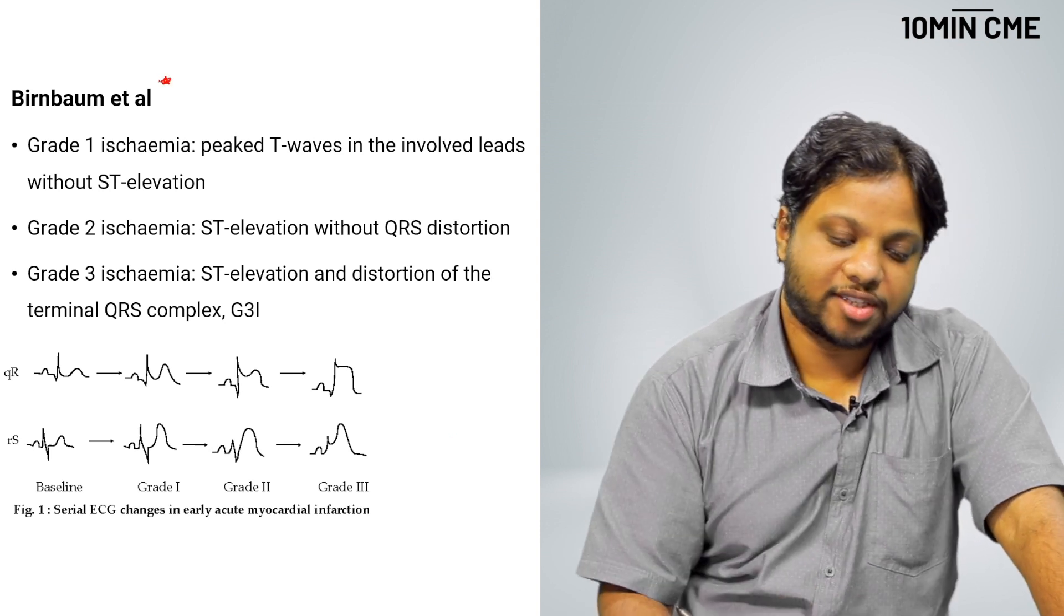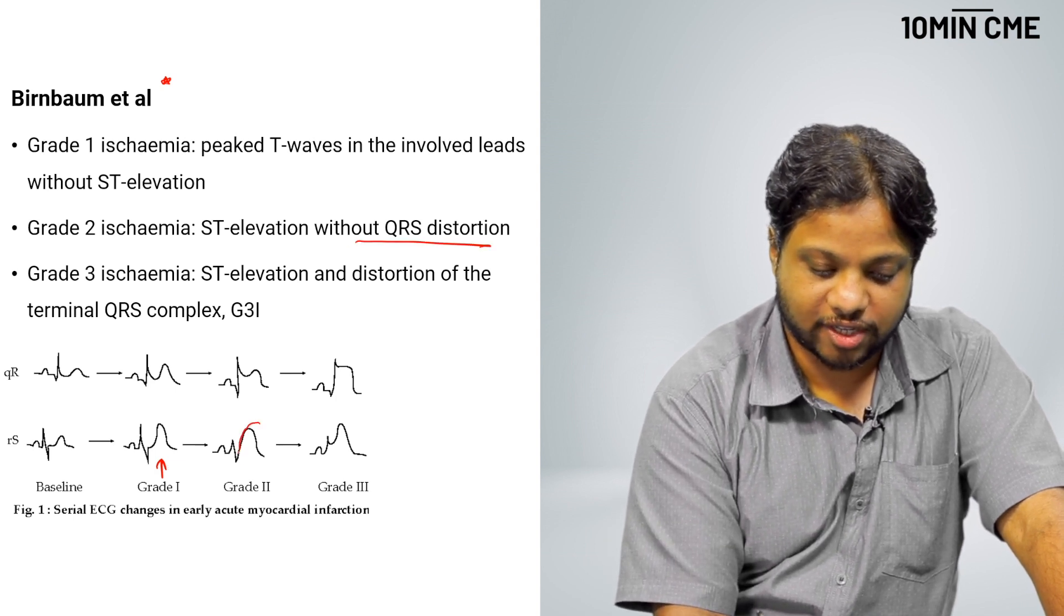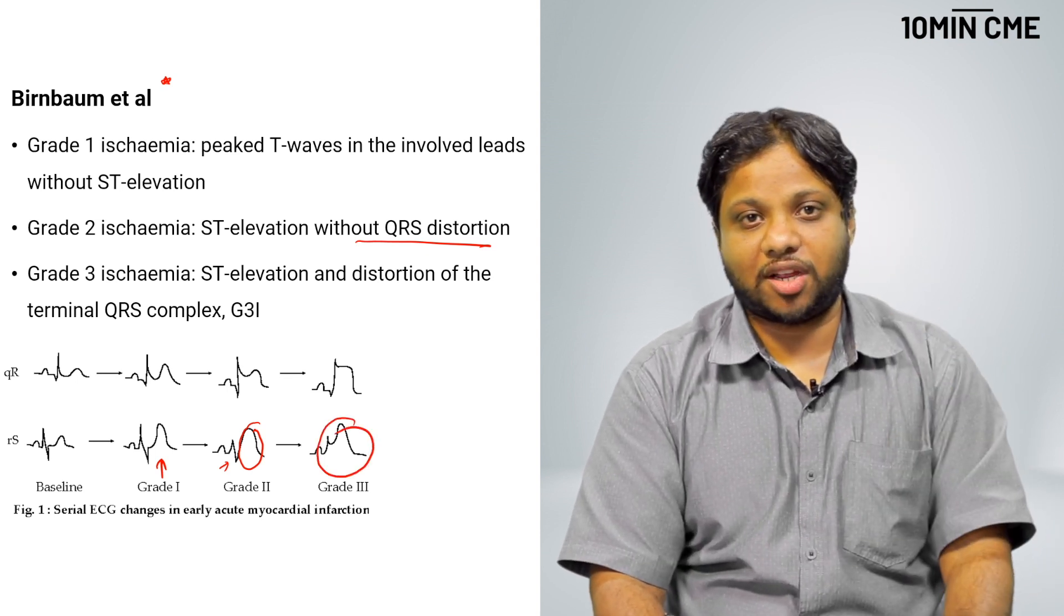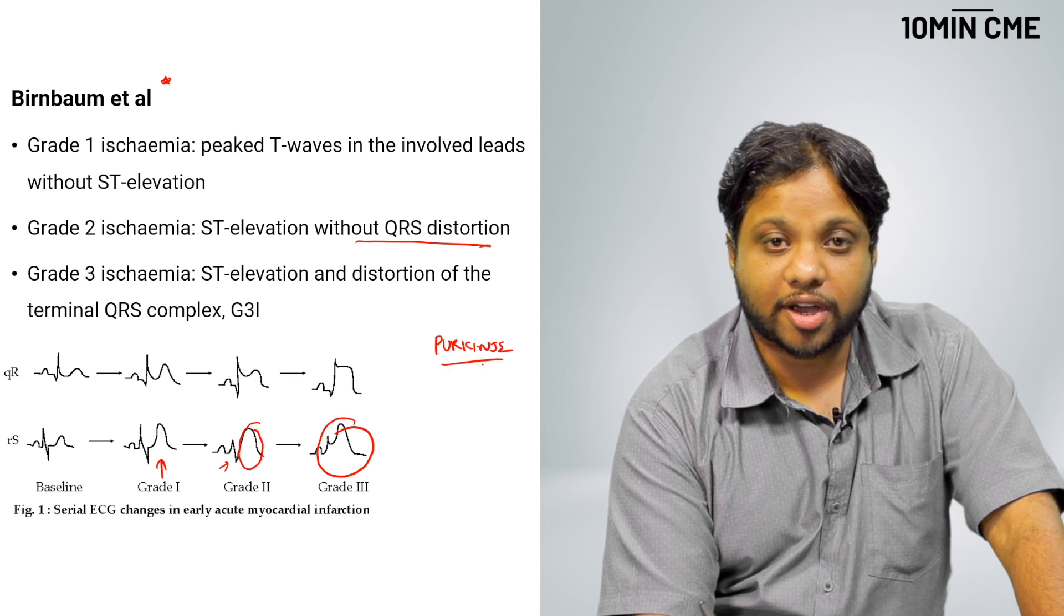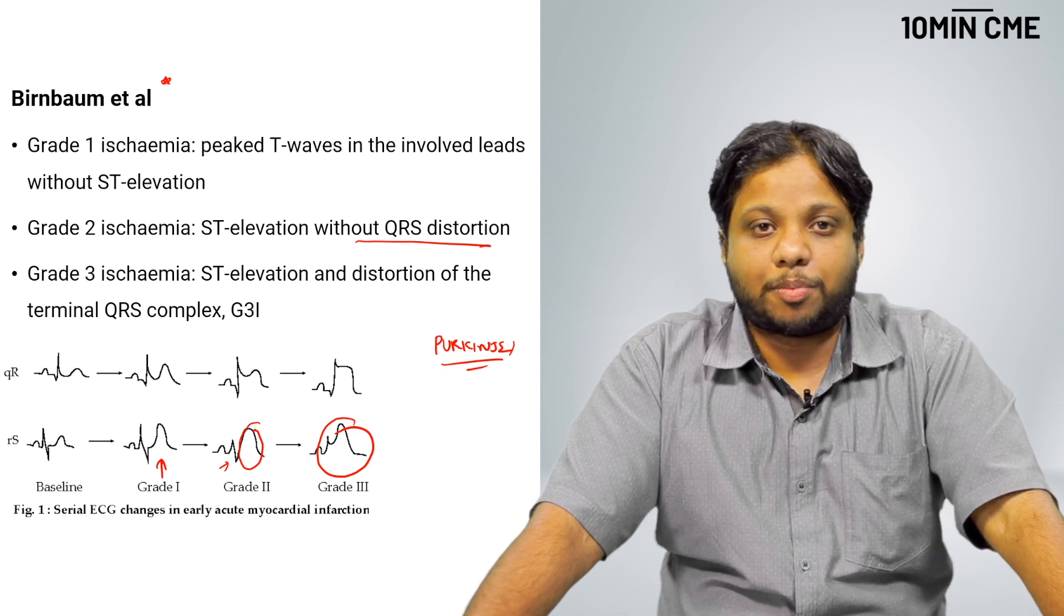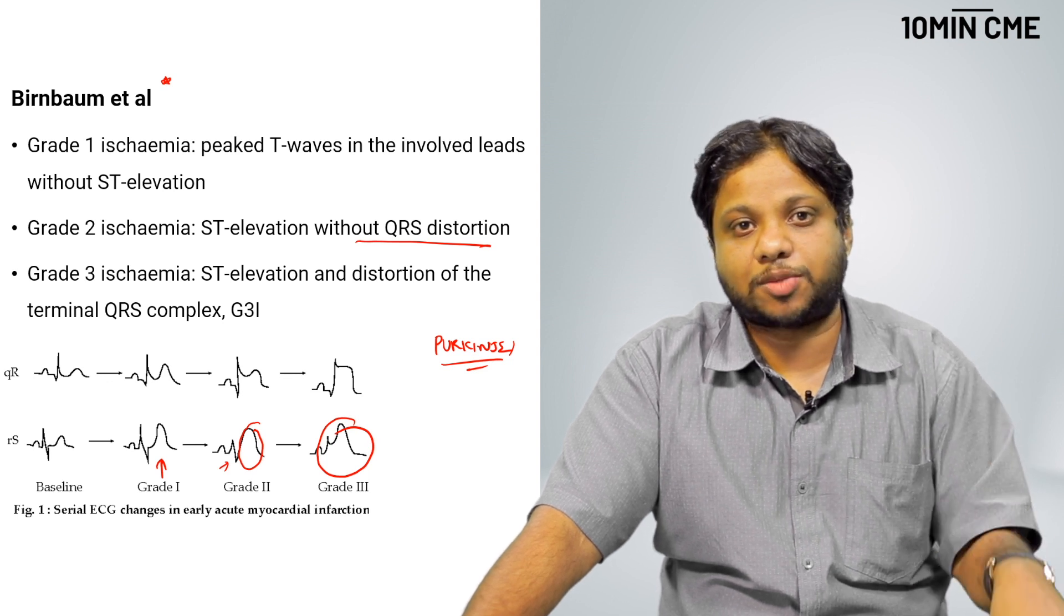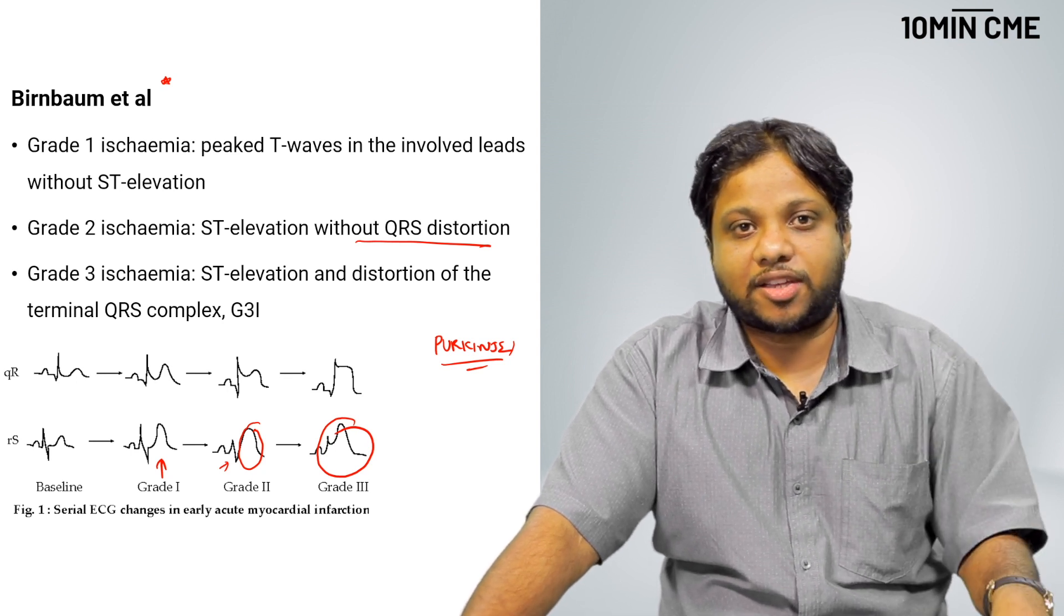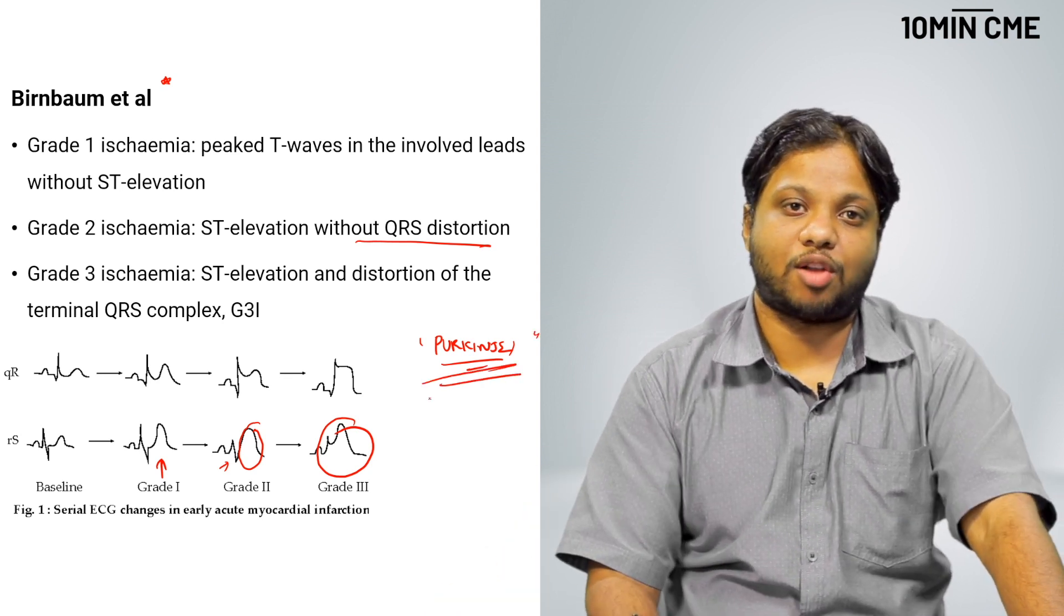This is a classification as per Birnbaum. You can see grade 1 ischemia is just a hyperacute T wave. Grade 2 is ST elevation without QRS distortion. You can see that the QRS is separate. Grade 3 is when it distorts the QRS complex as in our case. Whenever you see a grade 3 ischemia, it automatically indicates involvement of the Purkinje fibers. Now, your Purkinje fibers are the most resistant area to ischemia. Involvement of that signifies marked ischemia. The patient obviously is going to be sicker and what is more important is this patient might not have a very good response to primary PCI or thrombolytics. Grade 3 ischemia indicates Purkinje fiber involvement, a bad prognosis.